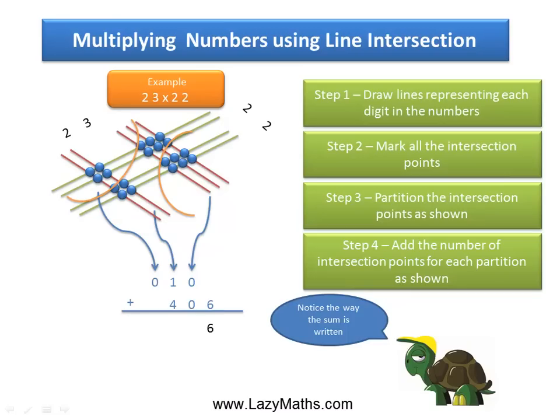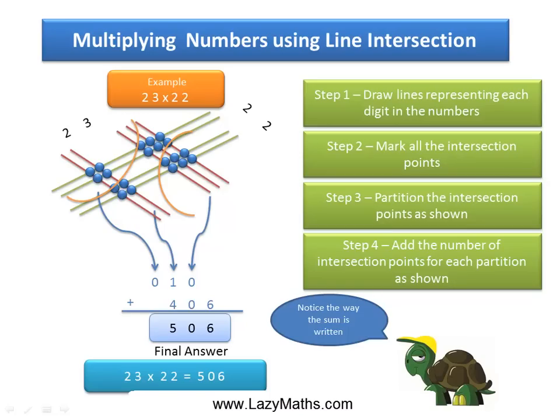And now we simply add these together: 6, 0 plus 0 is 0, and 1 plus 4 is 5. We get 506 as our final answer. So 23 times 22 equals 506. And that's it.